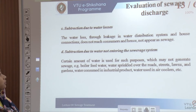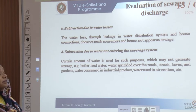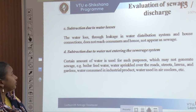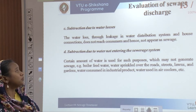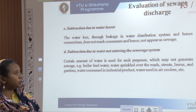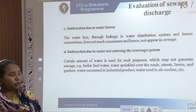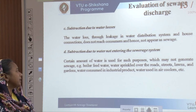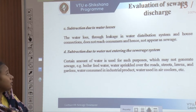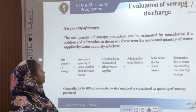Subtractions from sewage quantity include water losses through leakage in the water distribution system and house connections, which do not reach consumers and hence do not appear as sewage. Additional subtractions account for water not entering the sewerage system — such as boiler feed water, water sprinkled on roads, streets, lawns and gardens, water consumed by industrial products, and water used in air coolers.